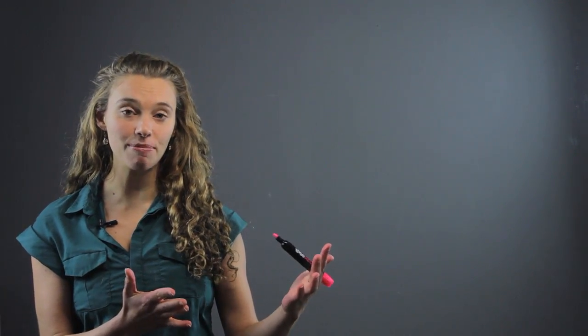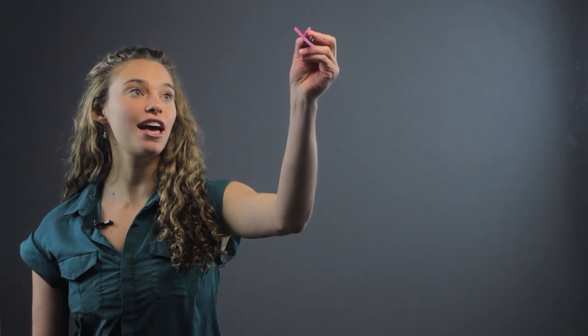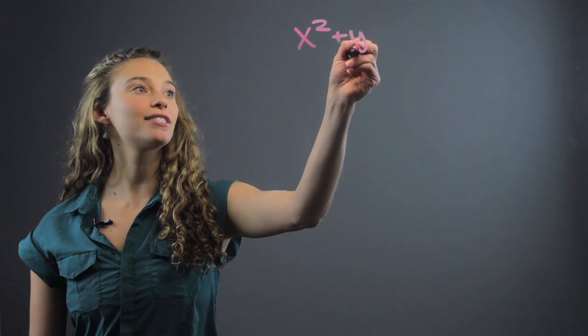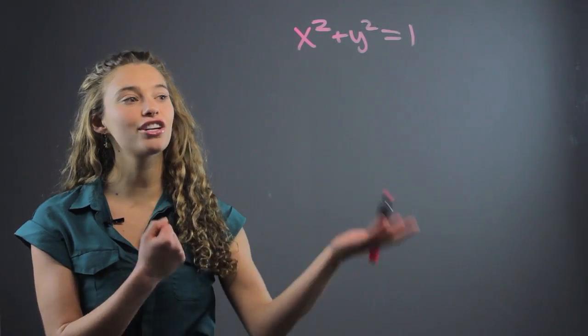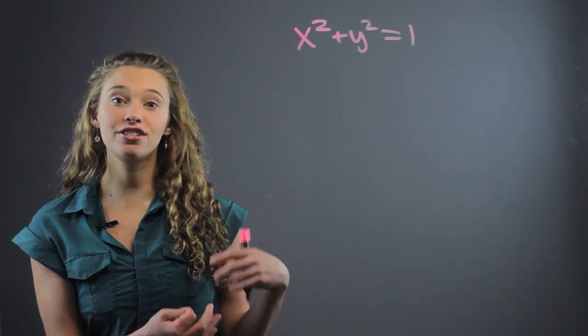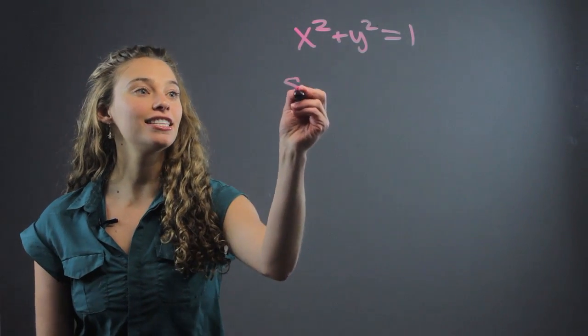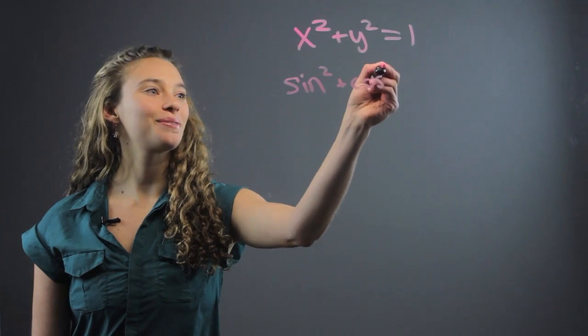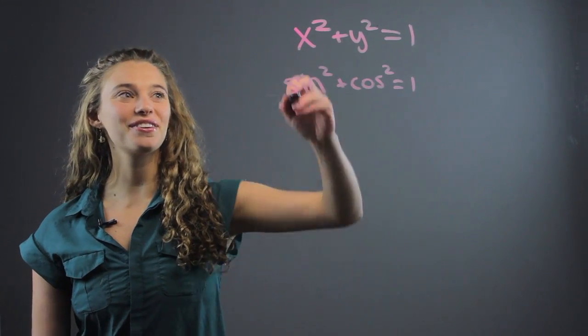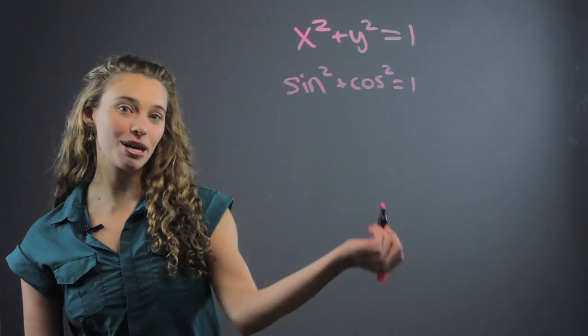These are two different things. We have trigonometric function word problems and circular function word problems. They're both related because for the unit circle, we know that x squared plus y squared equals 1. And when we look at trigonometric functions, we have the trigonometric identity that sine squared plus cosine squared equals 1. So you can see the relationship there.